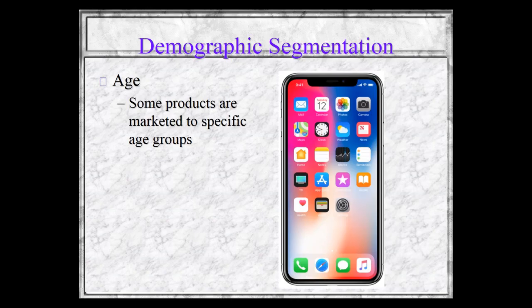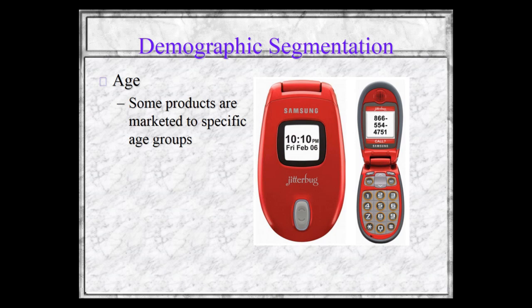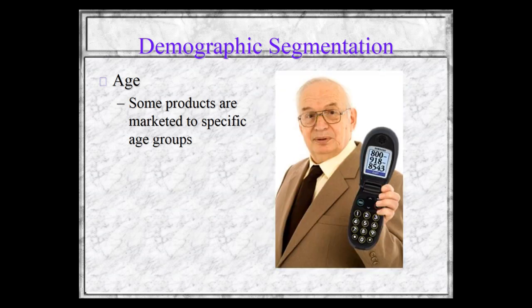Gender and age are demographic variables. Some products are marketed to specific age groups. Here is the new iPhone — clearly targeted to a younger demographic, but not too young because of the high price tag. Going to the other end, here is the Jitterbug by Samsung, with big buttons and a big screen, targeted to older users who don't care about all the bells and whistles of a smartphone — they just want to be able to see and enter the number.